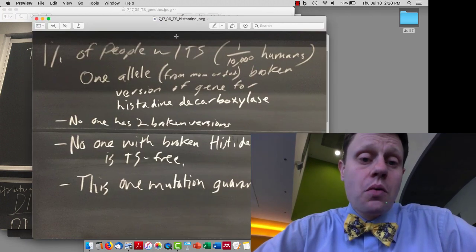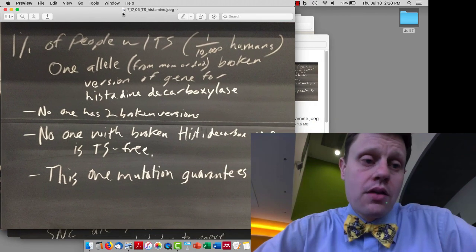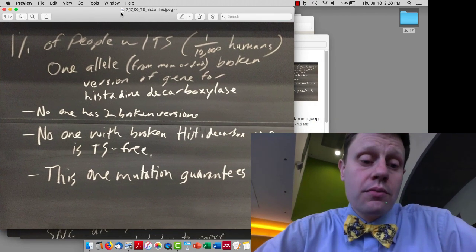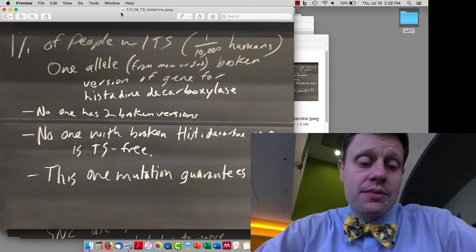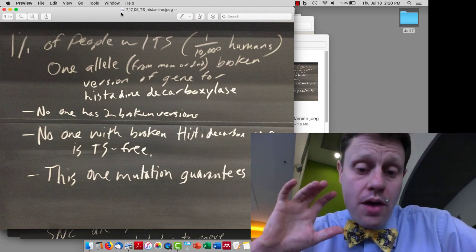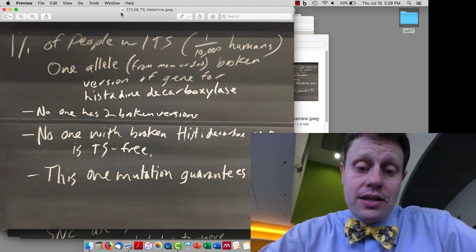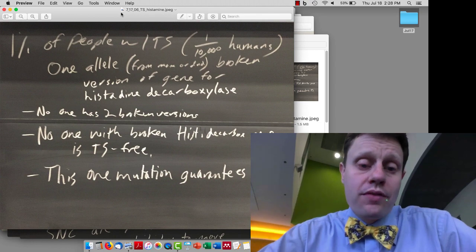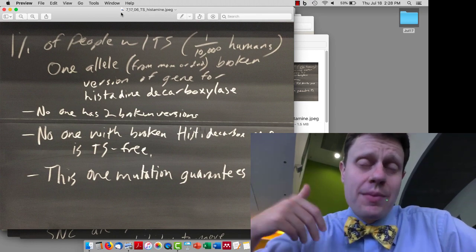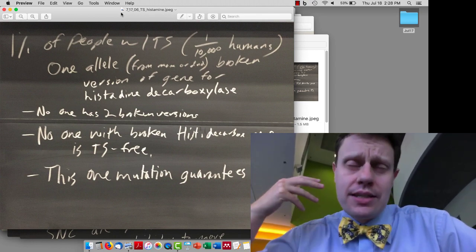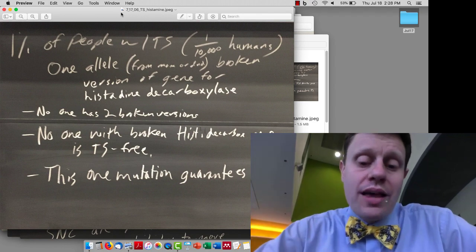Tourette's is interesting because there is 1% of people with Tourette's that do have a particular mutation that does guarantee this. That's a mutation that means that one of the histidine decarboxylase genes, one of the genes that makes the enzyme that converts histidine to histamine, is broken. What that means is that the person produces half as much histamine.